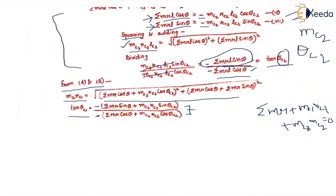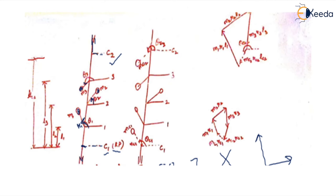This question can also be solved by the graphical method. We use the same diagrams used earlier for the analytical method. In the question, we are already given θ1, θ2, and θ3.